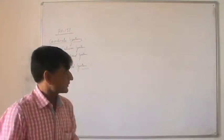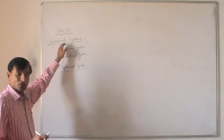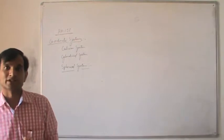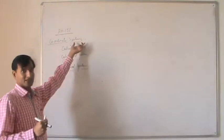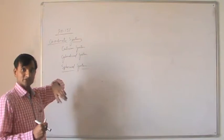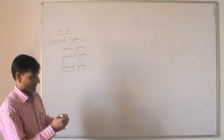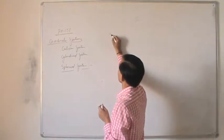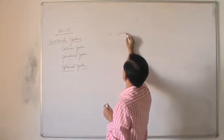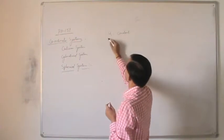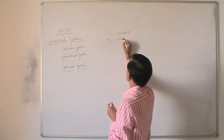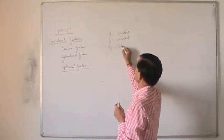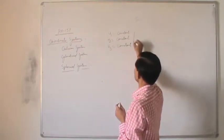Good morning. In the last class, we discussed about coordinate systems. We learned how to define a coordinate system using three perpendicular surfaces. For a coordinate system, you require three surfaces: u1 equals constant, u2 equals constant, and u3 equals constant.